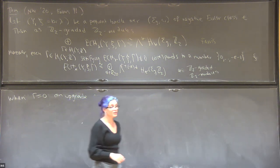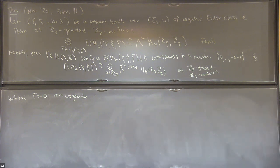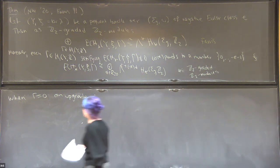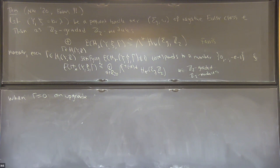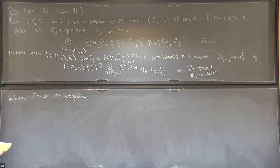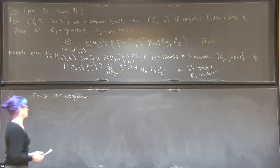Audience question: Are you going to tell us what a pre-quantization bundle is? Yes, I'll tell you in just a second. Basically, pre-quantization bundles are going to be certain S1 bundles over symplectic manifolds that are contact manifolds, and the derivative of the S1 action gives you the Reeb vector field, but you have to be a little bit more precise when you define it.